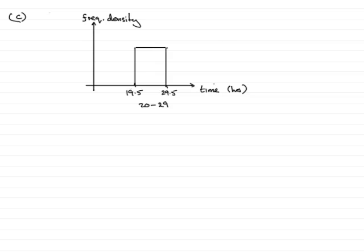We're told then that the number of children, that's the frequency, which is equivalent to the area within this bar, is 9.